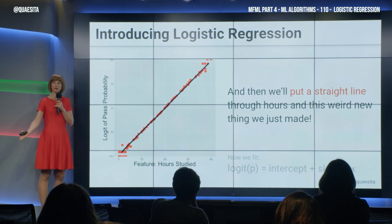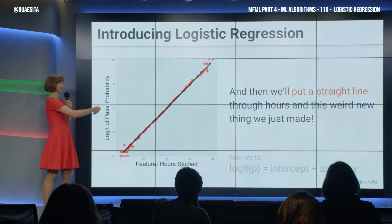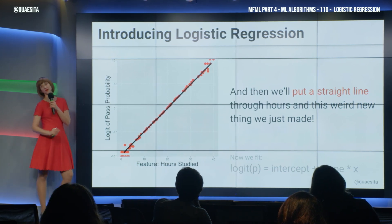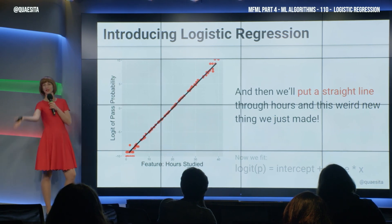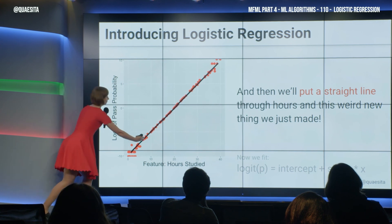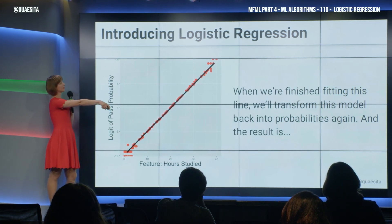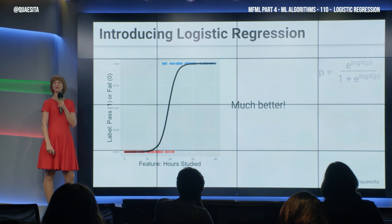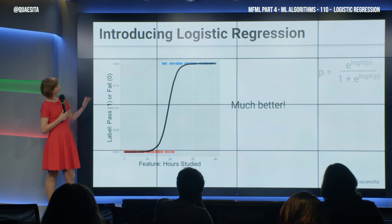But was that what we asked for? No, we didn't want a logit. So let's undo the damage — take this model and convert it back to our original coordinate space. It's like: flip it, fit it, and reverse it. When we pass this line through another function, we get this lovely S-shaped curve.